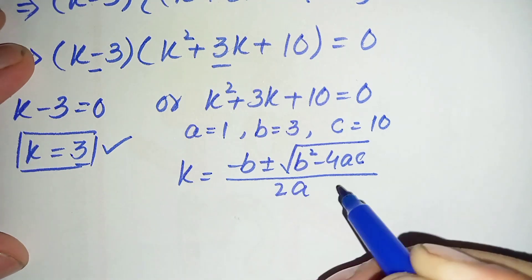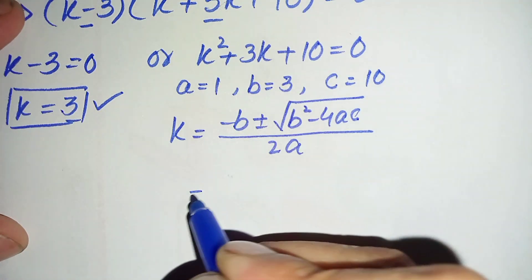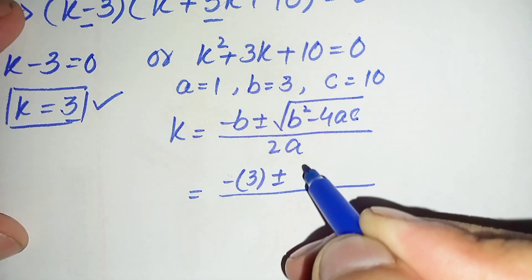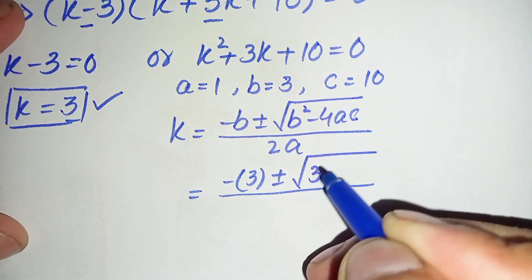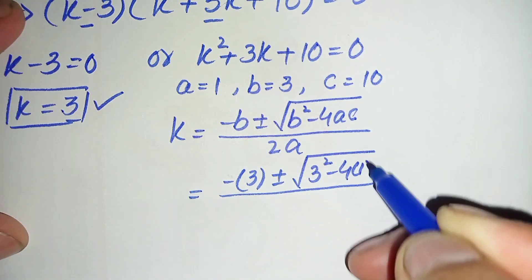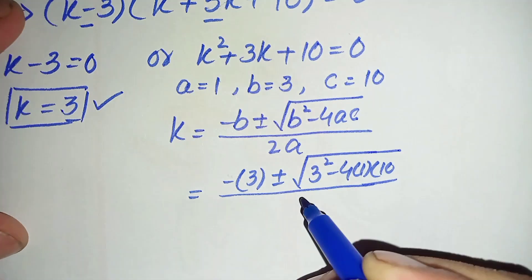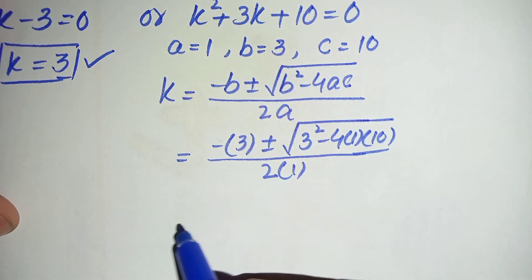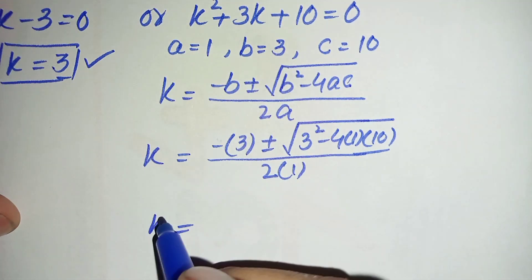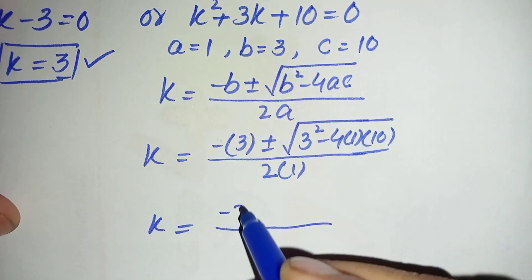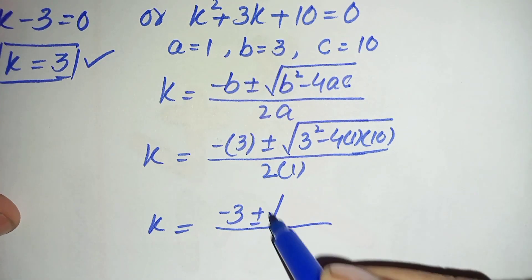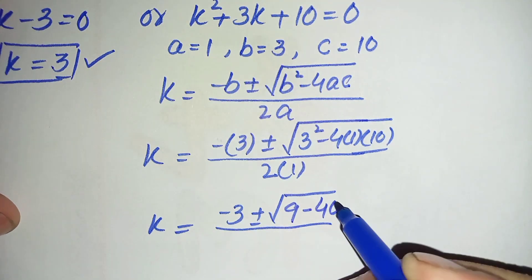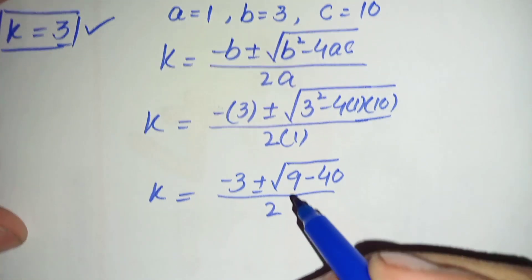The quadratic formula is: k equals minus b plus or minus square root of b square minus 4ac, divided by 2a. Substituting: minus 3, plus or minus square root of 3 square minus 4 times 1 times 10, divided by 2 times 1. This gives minus 3 plus or minus square root of 9 minus 40, divided by 2.